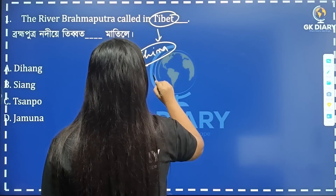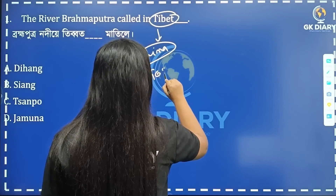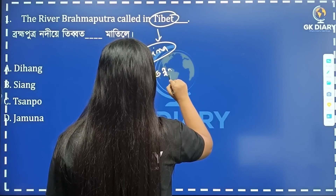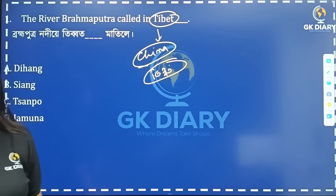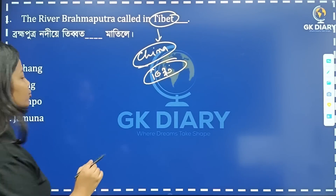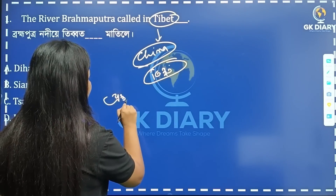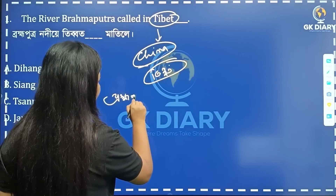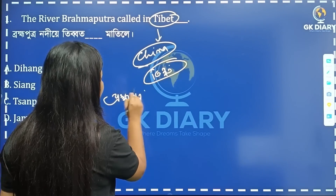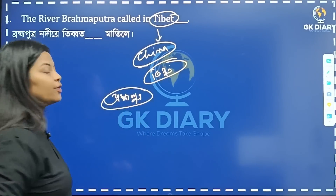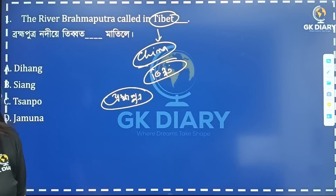Brahmaputra's origin is from a glacier. The river mainly originates from a glacier, which is its primary source.